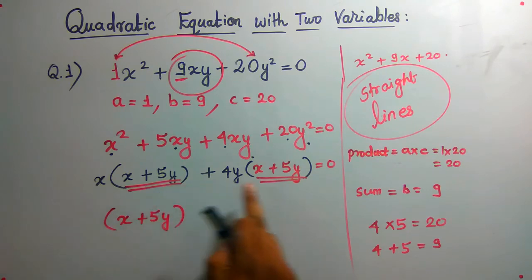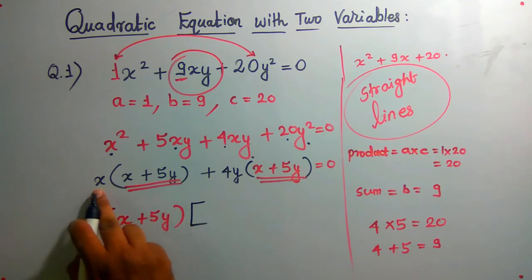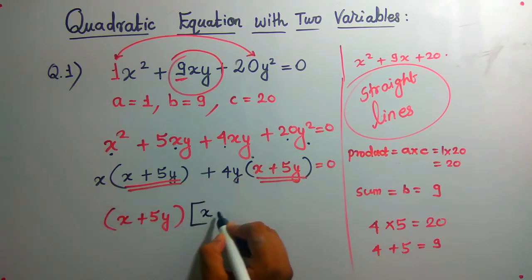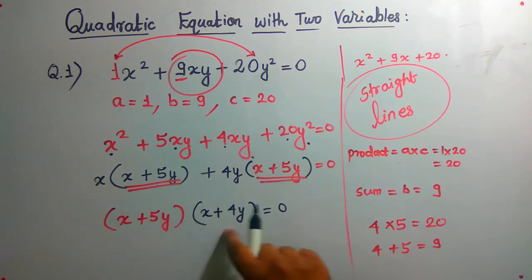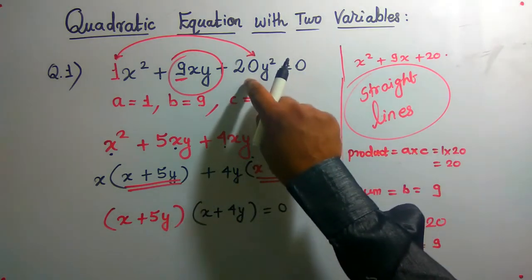So x plus 5y, take both common. I would be left with x plus 4y. So this is my final answer. That's it. If you do these products, then you will get the original equation.